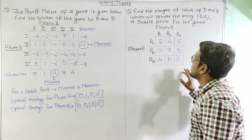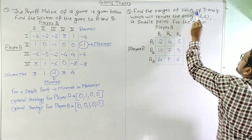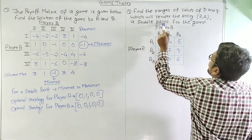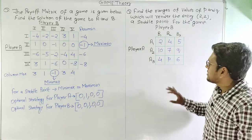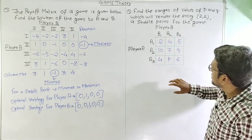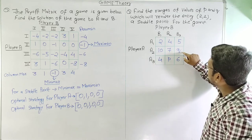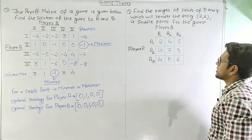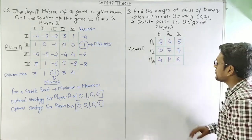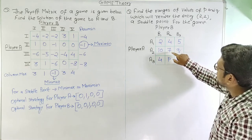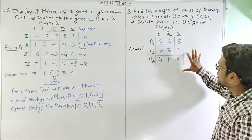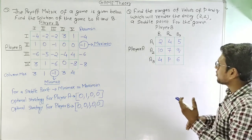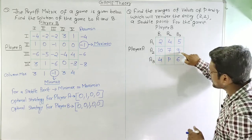Now let us move on to the next question. The question asks us to find the ranges of the values of P and Q so as to have a saddle point at the position of P and Q. We need to find out the range of values for P and Q such that the saddle point exists. We will first determine whether a saddle point exists by ignoring the values of P and Q.